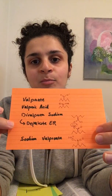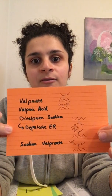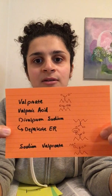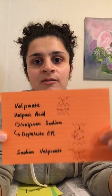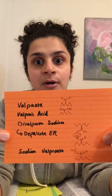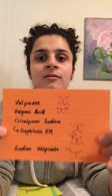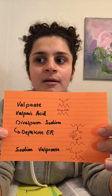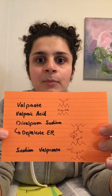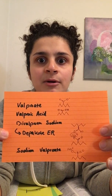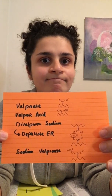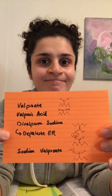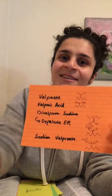So to summarize: Depakene, Depakote, Depakone — at the end of the day, all of these become valproate in serum. That's the active molecule, and that's why I use the name valproate.